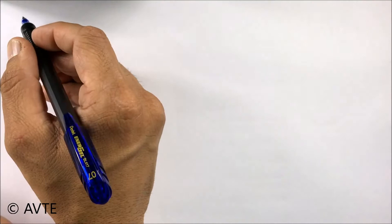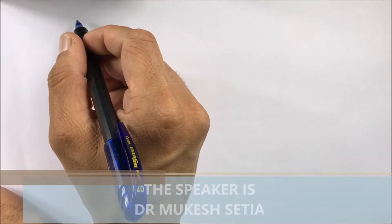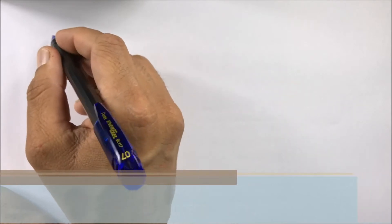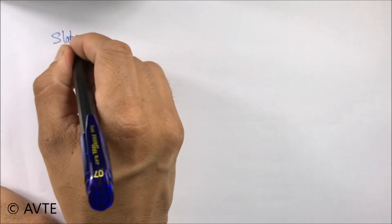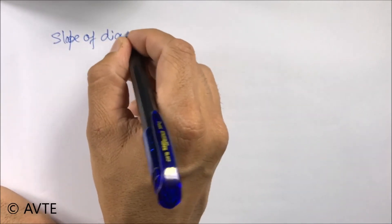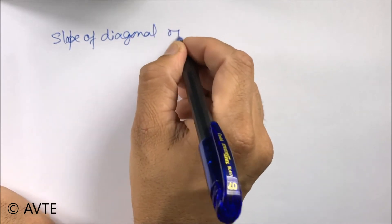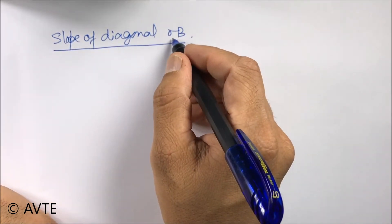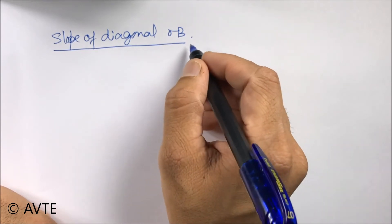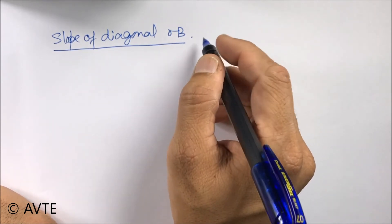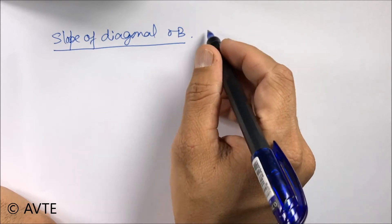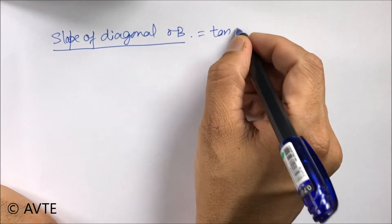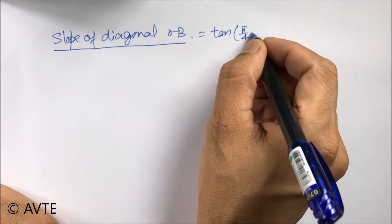Leaving the coordinates of A there, now we are moving on to the slope of diagonal OB. Since the diagonal OB is making the angle of pi by 4 with that inclined line, the slope of OB will be tan pi by 4 plus alpha.